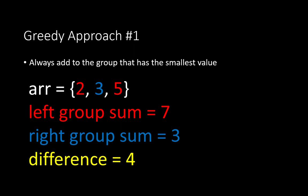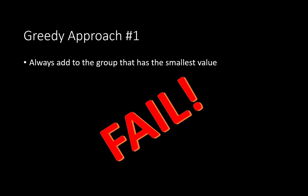In reality, we can do better than that — by having 2 and 3 in the left group and 5 in the right group, the difference becomes equal to 0. So the first greedy approach essentially fails.